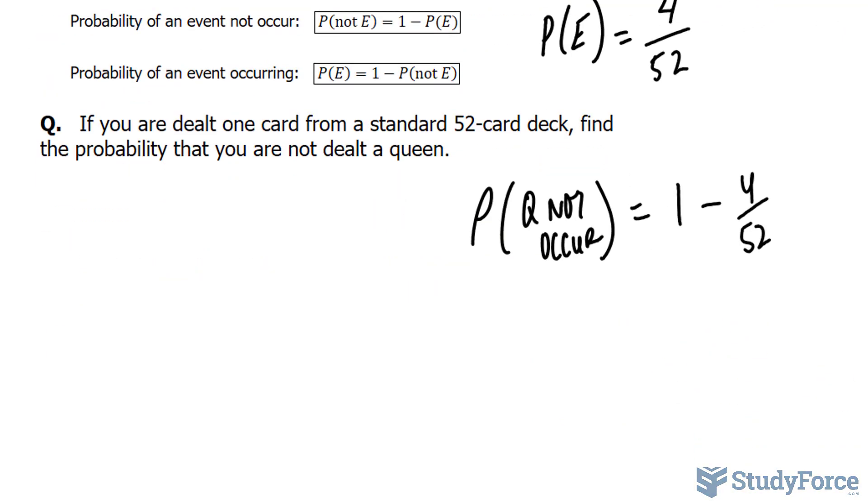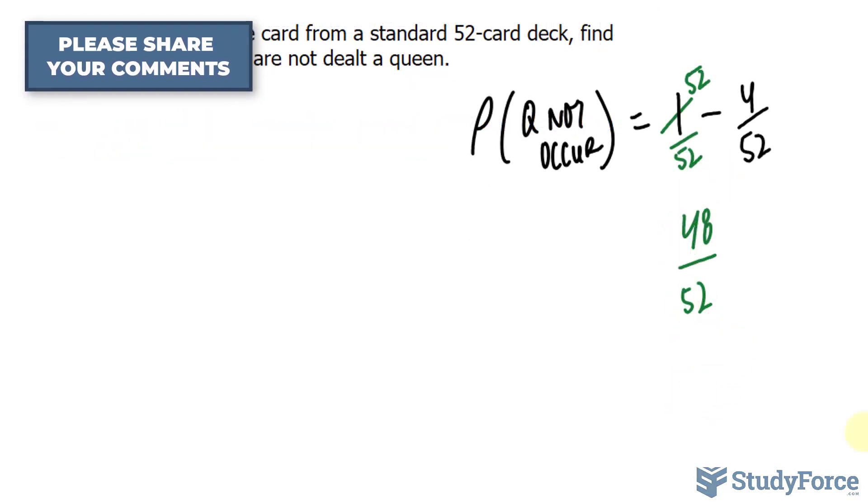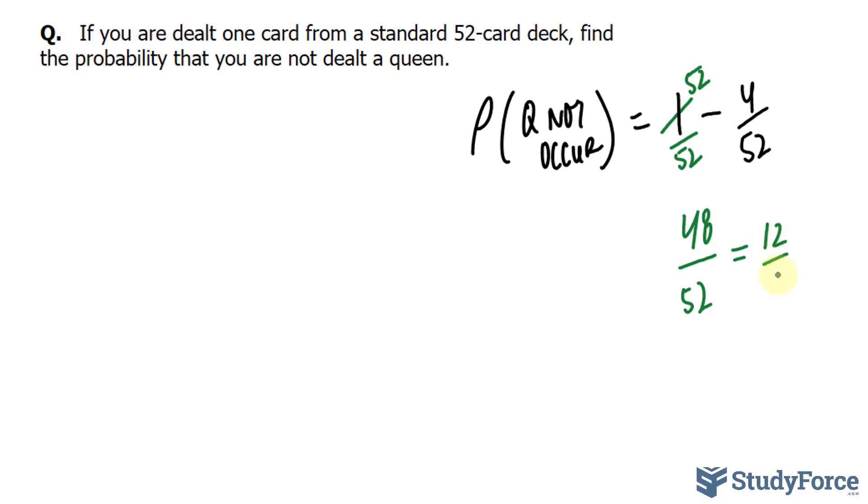You can use your calculator to compute this, or you can find a common denominator. That's what I'll do. 52, that's 52. We have 52 minus 4 is 48, over 52. And this reduces down to 12 over 13.